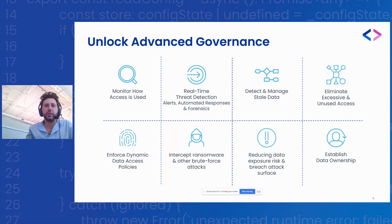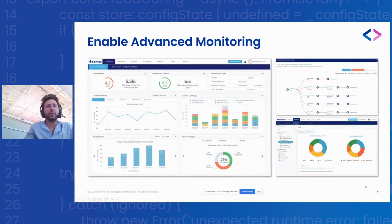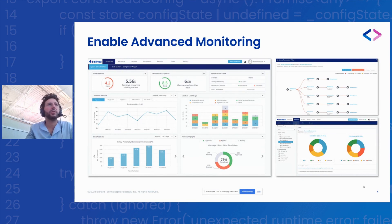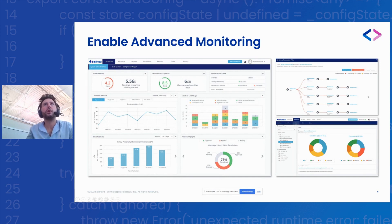All of this is added to your core governance capabilities in our generic connectors and connections that don't currently support activity monitoring, by adding those capabilities through a third-party integration via the REST API. This feeds into all the different dashboards and presentations in FAM — you can see the activity trends, alerts, and of course highlighting unused access and unused data.